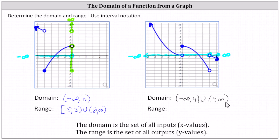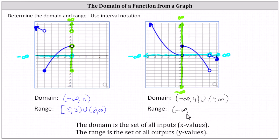Now we'll analyze the graph vertically to determine the range. We need to be careful when analyzing the graph vertically. It may appear as if this open point is the lowest point on the graph, but we're assuming this piece on the right continues downward, and therefore the range approaches negative infinity. Continuing upward, at y equals zero we have a couple of open points, but y equals zero is in the range because of the closed point on this piece of the graph. The function takes on all y values as y increases and approaches infinity. This indicates the range is all real numbers, indicated using interval notation as the open interval from negative infinity to positive infinity.